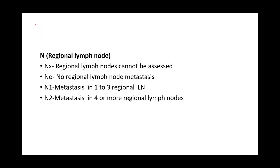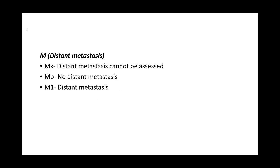Regarding N, the regional lymph node involvement: NX — regional lymph nodes cannot be assessed. N0 — no regional lymph node metastasis. N1 — metastasis to one to three regional lymph nodes. N2 — metastasis to four or more regional lymph nodes. For M, distant metastasis: MX — cannot be assessed. M0 — no distant metastasis. M1 — distant metastasis.